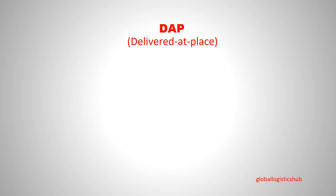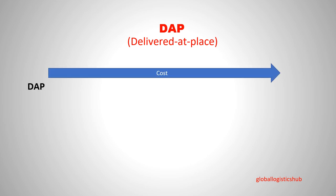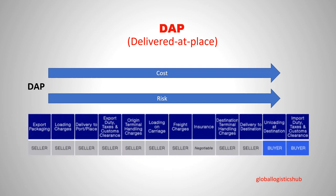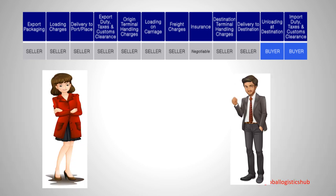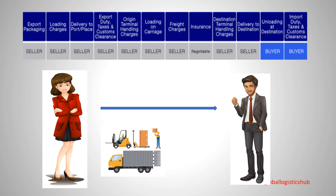Incoterm number five is DAP, which means Delivered at Place. Under DAP, the seller is responsible for all costs and risks associated with the delivery of goods to the final destination, usually the buyer's premises. Risk transfers from seller to buyer when the goods are available for unloading. The buyer is then responsible for unloading the goods at the end destination. In DAP, neither party is obligated to make a contract of insurance, but it is recommended.